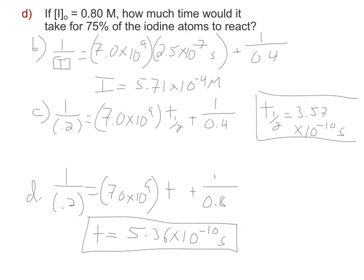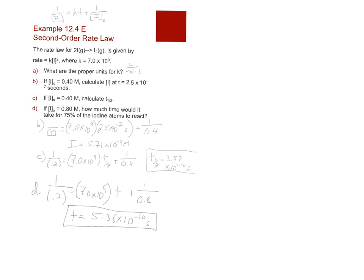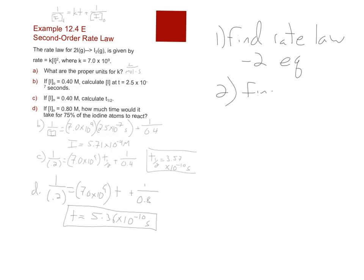So for second order kinetics, most of the work is identifying which rate law to use. You have the integrated rate law, the differential rate law, and your values of K. Once you know both rate laws and K, you just use them to solve problems repeatedly. The construct is always the same: find your rate law—zero, first, or second order—get two equations from it, find K with units, and then apply it to new situations. Once you have the rate laws, you can predict the reaction at any time or concentration.